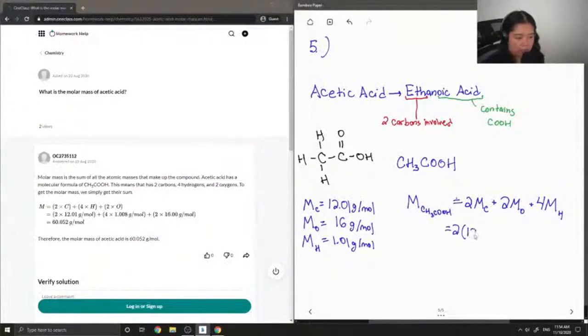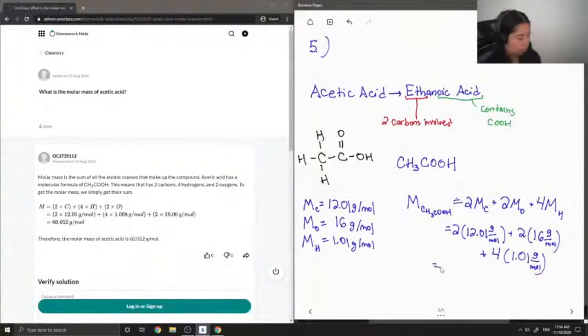Now I can plug in their values. If you add it all up and solve for the answer, you end up getting a total molar mass of 60.05 grams per mole for acetic acid.